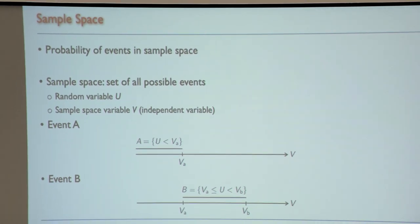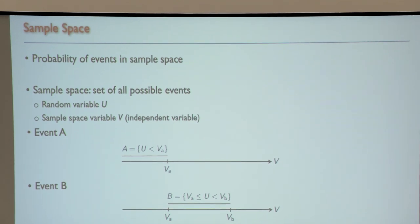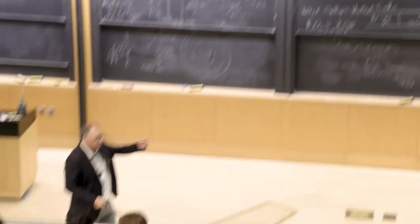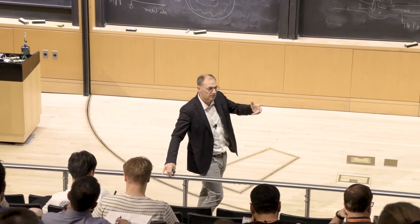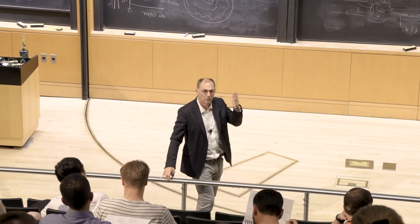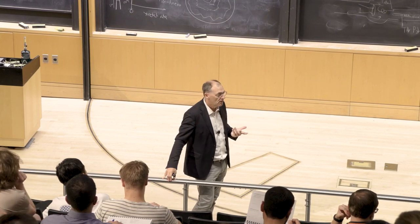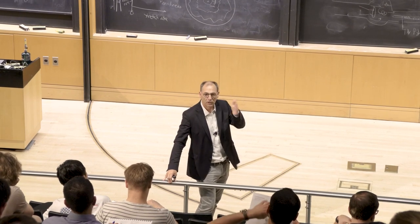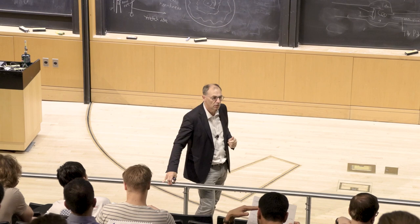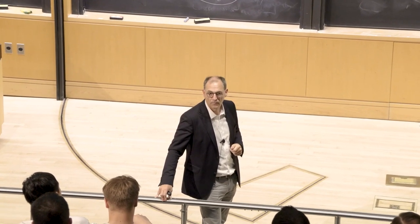I can do a local measurement of velocity and want to know the probability that I measure a certain velocity. What's the probability that I measure exactly 5 m/s? The probability is zero — the measurement will be 5.1 or 4.9, never exactly 5. Finding an exact value is impossible. So we need a different way of defining probability.